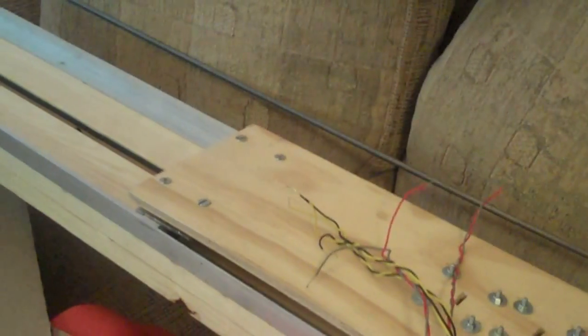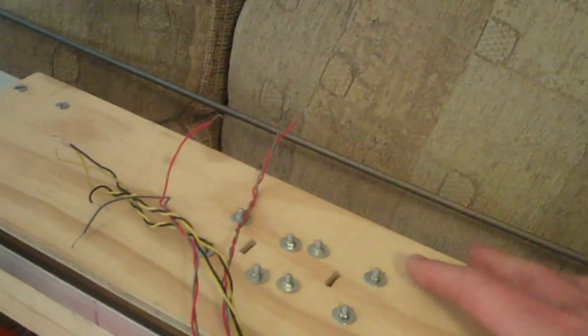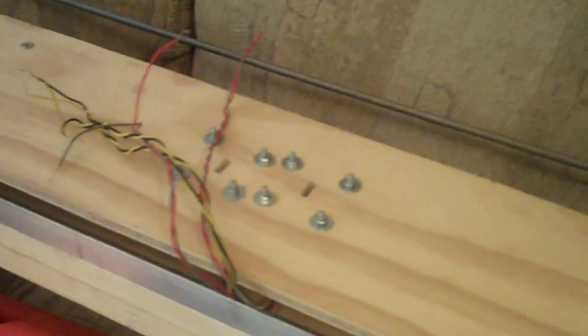And while yeah it will move, the problem is that the carriage wants to twist side to side because the motors aren't directly in line. So they're not applying the torque directly across the track.